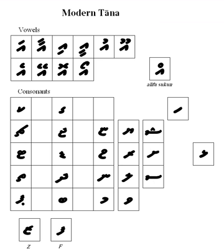Thana, like Arabic, is written right to left. It indicates vowels with diacritic marks derived from Arabic. Each letter must carry either a vowel or a sukun which indicates no vowel.